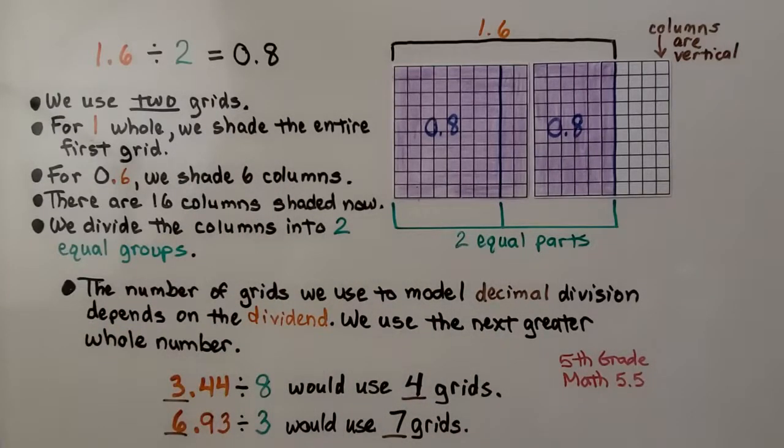The number of grids we use to model decimal division depends on the dividend. We use the next greater whole number. This is not rounding. It doesn't matter if the 4 tells the 3 to stay the same. We just use the next greater whole number. So if we have 3 and 44 hundredths, we're going to use 4 grids so we can put the 44 hundredths on the last grid.